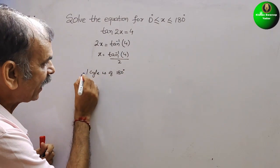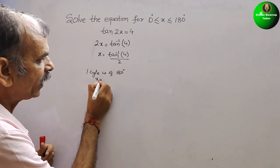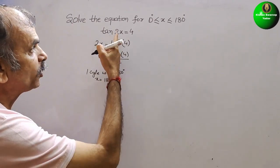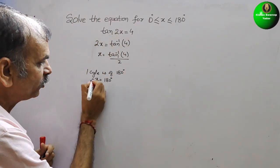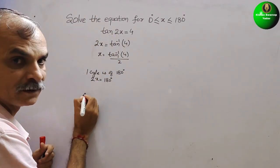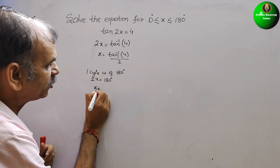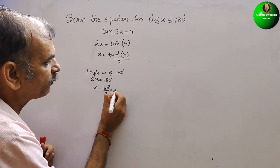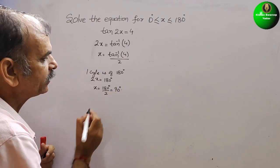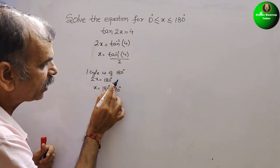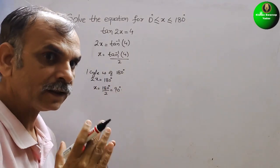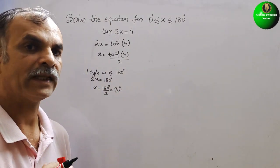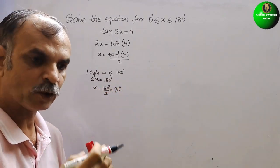One cycle is of 180°. But here they have given 2x, so we write 2x. That means x = 180°/2 = 90°. So one complete cycle must be completed in 90°, meaning in 180° we will get 2 cycles.